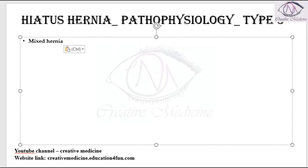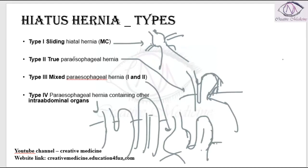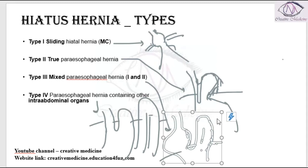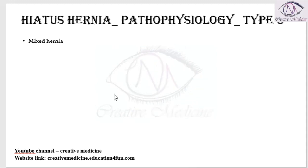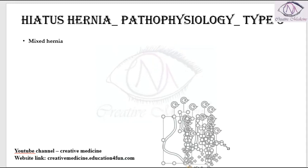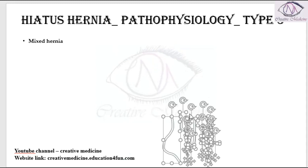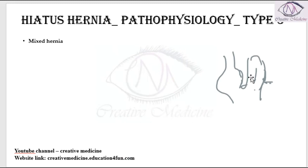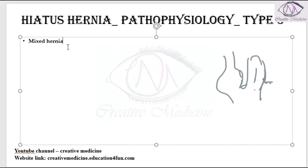In Type 3, the features of Type 1 and Type 2 are both present. The gastroesophageal junction enters the thorax, and along with that, the fundus or a part of the stomach also herniates into the thorax.